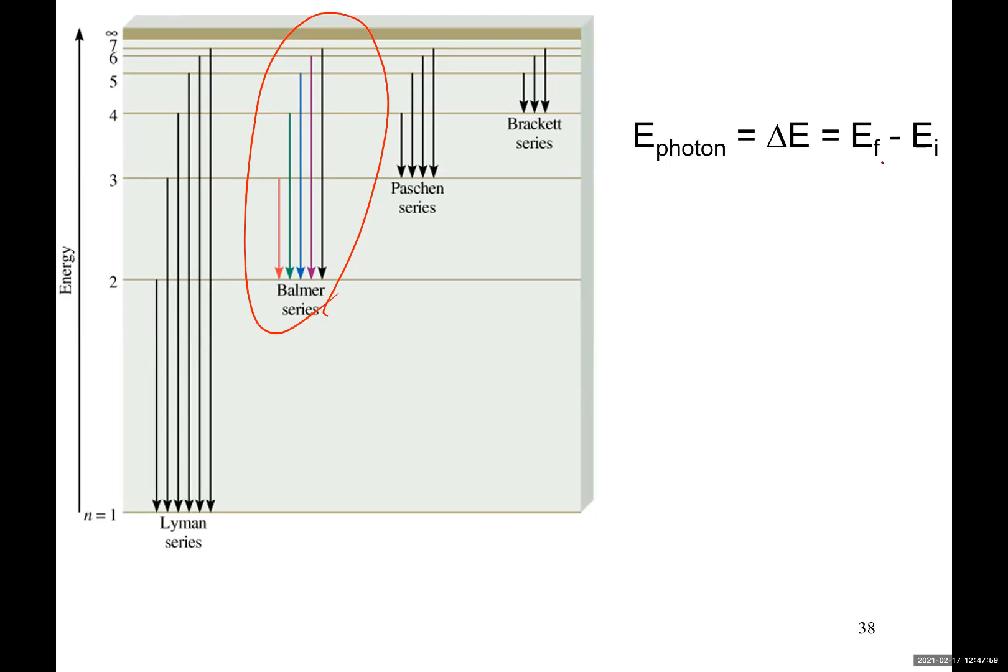Suppose we call the energy level, which is lower energy level, which is final point where electron drops, E final. And this is higher energy level, initial level where electron is in excited state and electron is falling down from E initial to E final.